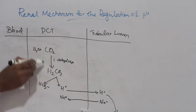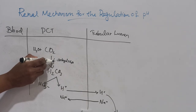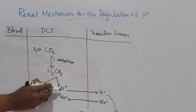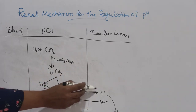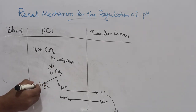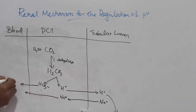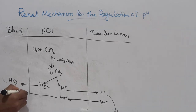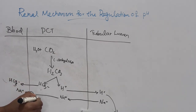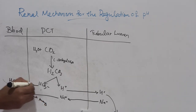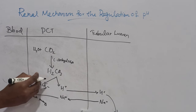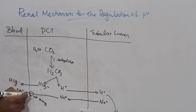In the proximal convoluted tubule, carbonic acid is formed from CO2 and water by carbonic anhydrase, present in renal tubular epithelial cells. Carbonic acid dissociates to H+ and HCO3−. The H+ ions are secreted into the tubular lumen in exchange for sodium ions and excreted in urine. The resulting bicarbonate and sodium are reabsorbed into the blood, with energy provided by the sodium pump.